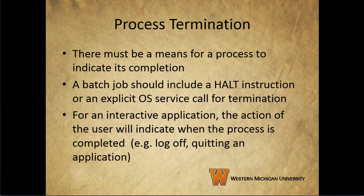Now that we know some things about creating processes, we need to take a look at how to terminate them. There has to be a means for a process to indicate that it's completed. A batch job should include a halt instruction or an explicit OS service call for termination. For an interactive application, the action of a user can indicate when the process is completed — for example, the user logs off of a website or quits the application.